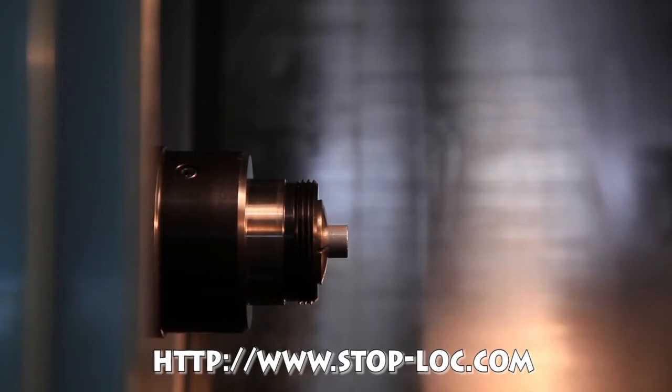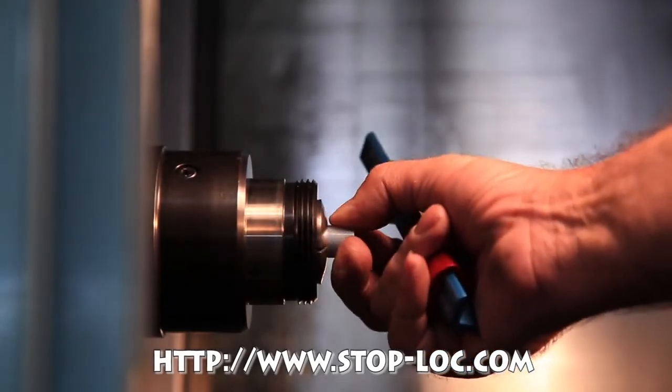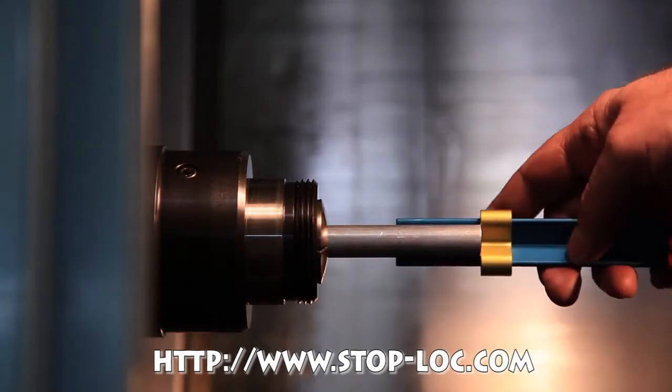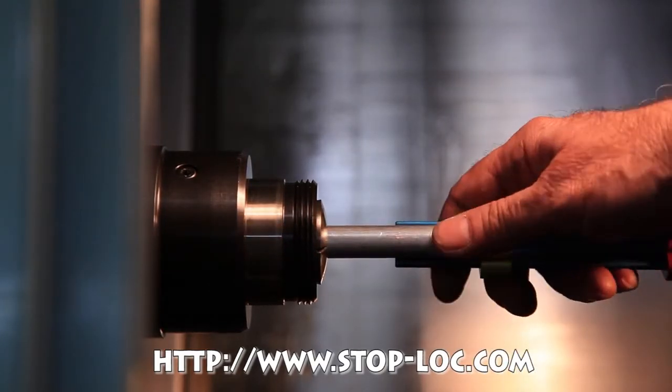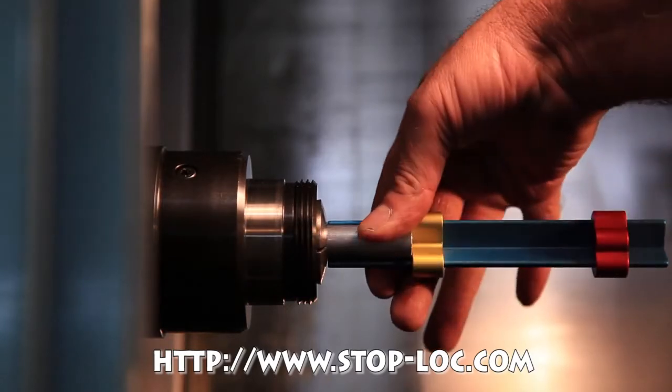I've pre-set the Stop-Loc to an inch and a half to show you how you use it as a front collet stop. First of all, you simply pull out your stop, put it up against the Stop-Loc, push the Stop-Loc in until it touches the collet.